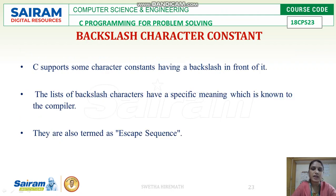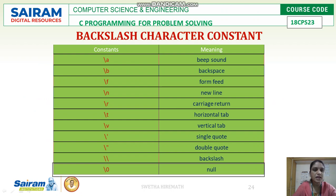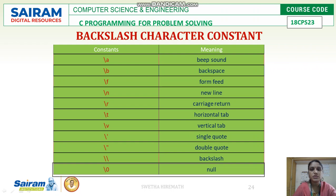The last type is the backslash character constant. C supports character constants having a backslash in front of them. These have specific meanings known to the compiler and are also called escape sequences. Examples include \a, \b, \f, \n, \r, \t, \v, \', \", \\, and \0. Commonly used ones are the newline character, horizontal tab, vertical tab, and null character.